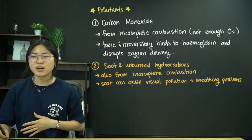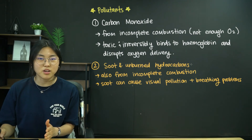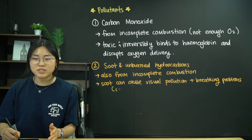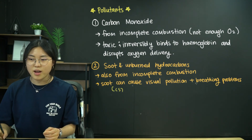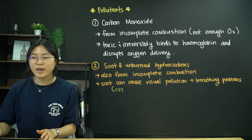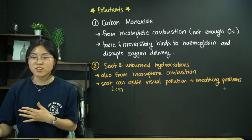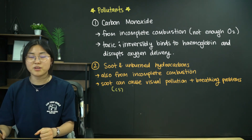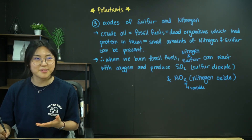Number two, we have soot and unburned hydrocarbons, also produced from incomplete combustion of fossil fuels and alkanes. Soot is basically just solid carbon — like graphite. It can cause visual pollution if it's deposited on trees and buildings, and it can also cause breathing problems, obviously, if you're breathing in solid particles. Unburned hydrocarbons — we don't want to breathe in alkane gases either.